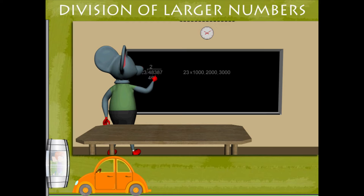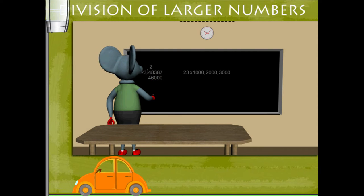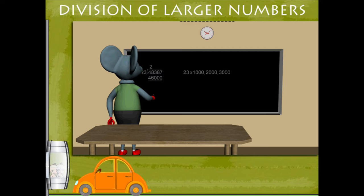He writes 2 at the top because 46,000 can be subtracted from 48,387. After subtraction, Toby gets 2,387.